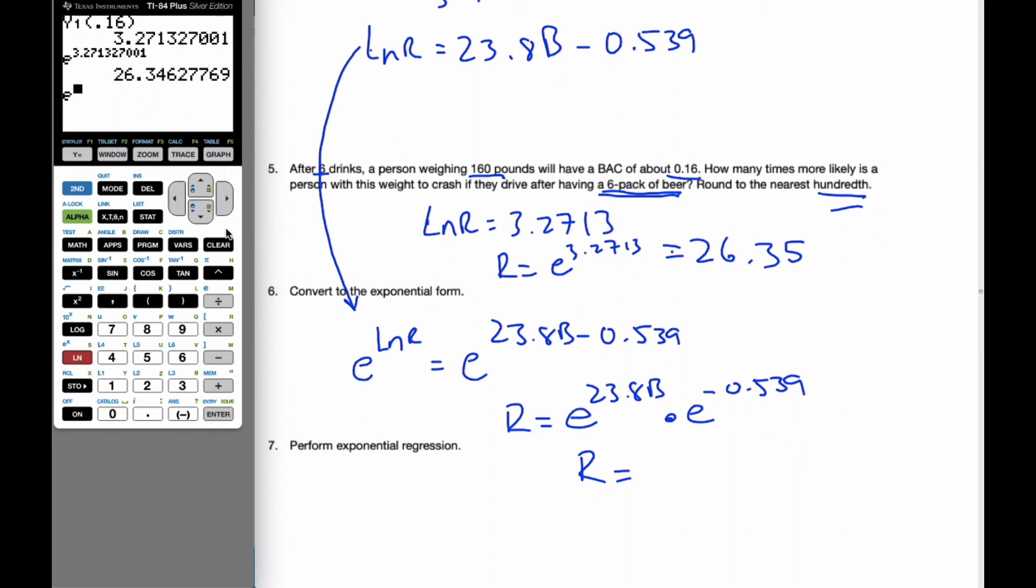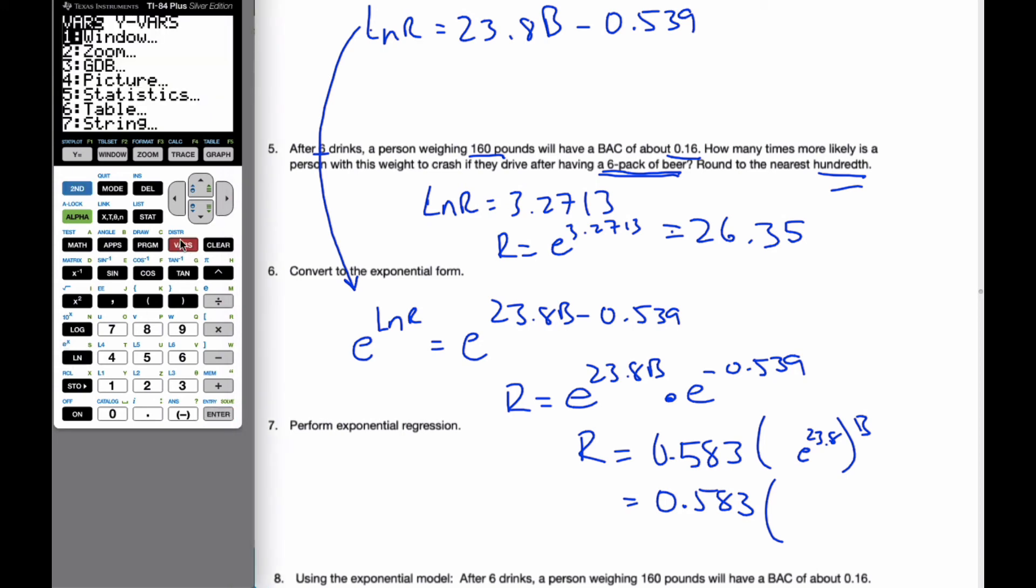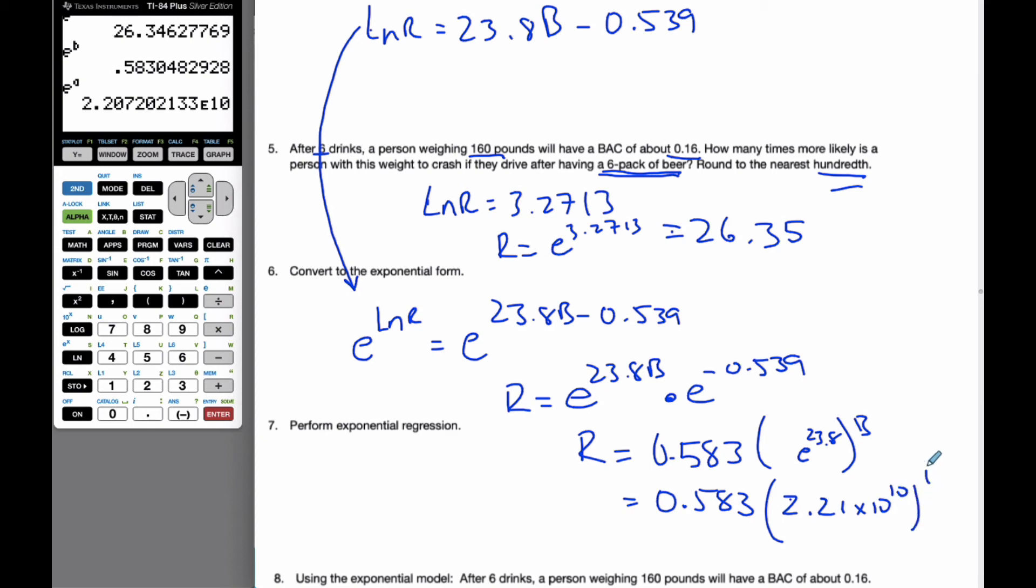And what I can do, I want to go e, I want this 0.539, which was the B value in my equation. So without typing these numbers in, if I go to variables, I'm going to go to statistics, which is where I have things, and it's in my regression equation, it was my variable B. So e to the power of B is going to be 0.583 times e to the 23.8B. Well, again, I can put this into my calculator. And so my equation, my exponential equation, if I go e, variables, number 5, statistics, to your equation, and number 2, A value, this is going to be 2.21 times 10 to the 10 to the power of B.